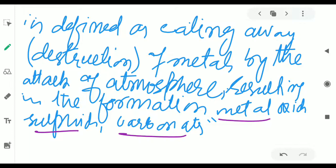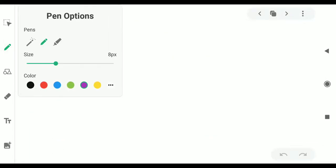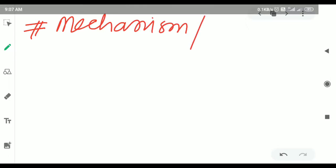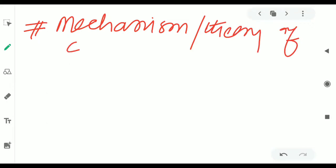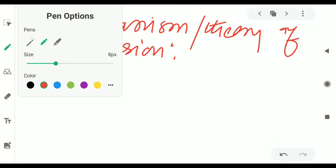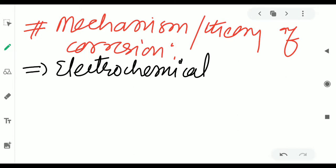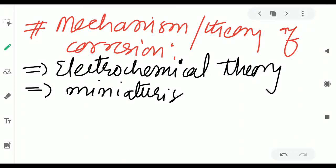This is the important point. Mechanism of corrosion. Corrosion is explained by electrochemical theory. This theory postulates that a very large number of miniaturized electrochemical cells are formed on the surface of metal.